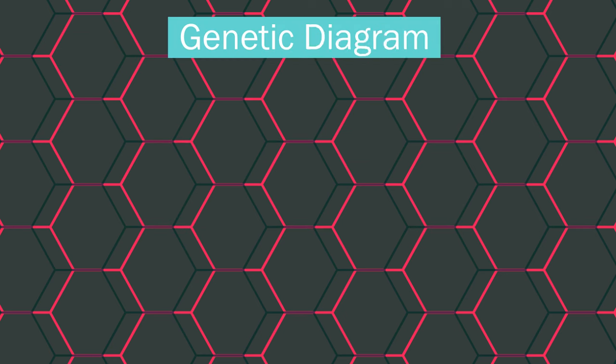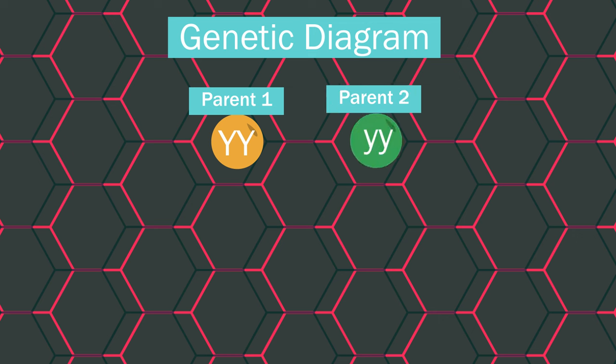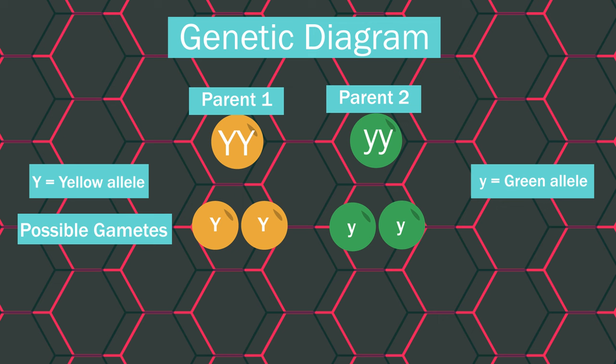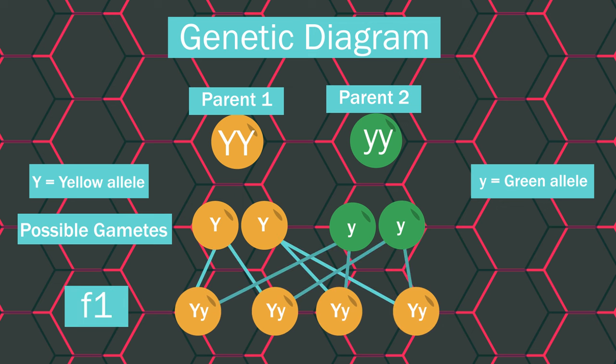Genetic diagrams are great for showing how this works. We have two parents. The yellow pod parent with the two dominant yellow genes. Notice how their dominant traits are given a capital letter. And the green pod parent with the two recessive green genes, which are shown by a smaller letter. These are their possible gametes. And these are the possible genotypes of the offspring. Because the yellow gene is dominant, all of the offspring will have the yellow pod phenotype, but do carry the green recessive gene.